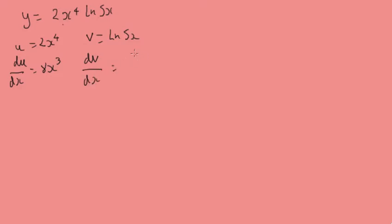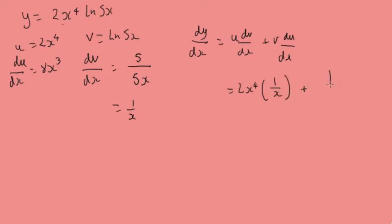And then dy by dx would be u dv by dx plus v du by dx, so u would be 2x to the power of 4 times dv by dx which is 1 over x plus v which is the log of 5x times du by dx which is 8x cubed. Tidy that up, that's going to cancel out. So we'll get 2x cubed plus 8x cubed log 5x.